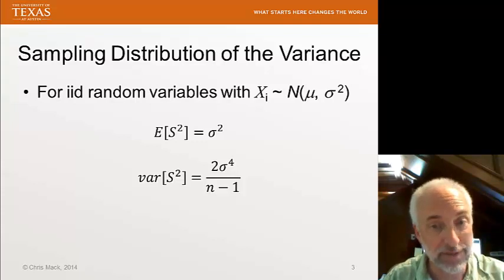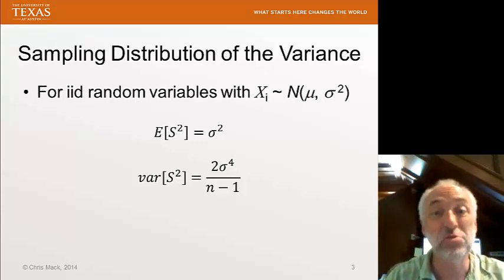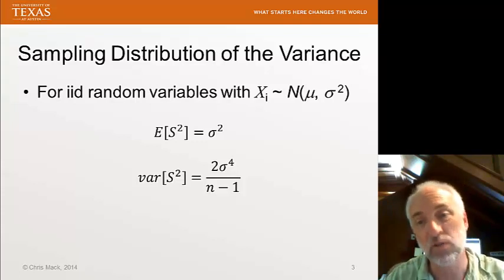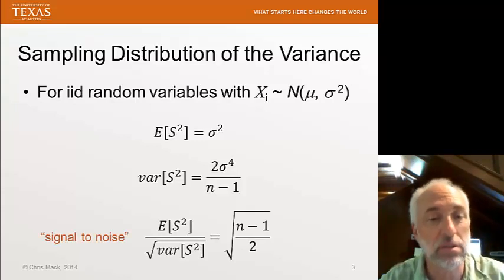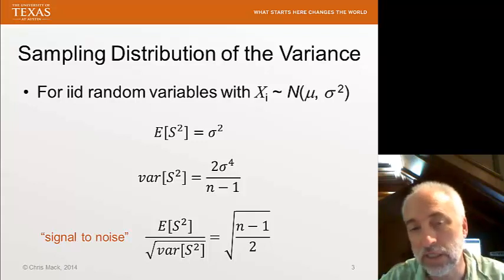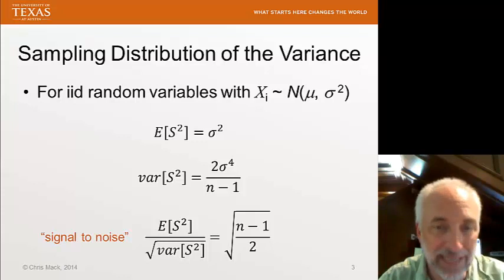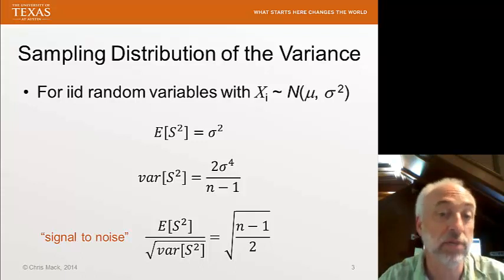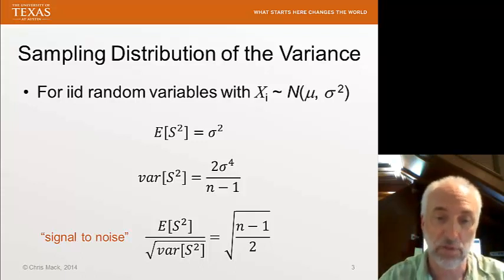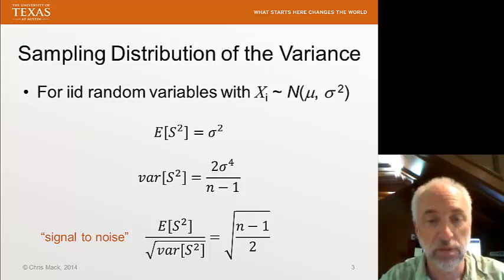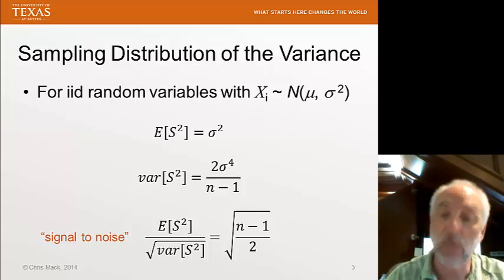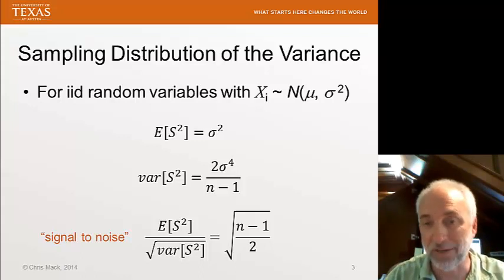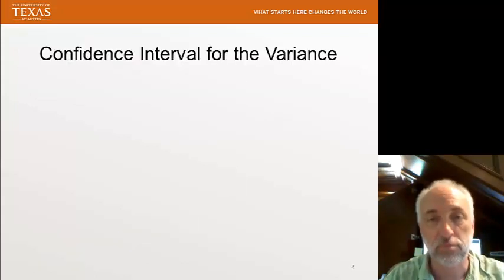The variance of the sample variance is two times sigma to the fourth. That is the variance squared divided by n minus one. And one useful kind of calculation to do in this case is to consider the expectation of the variance divided by the standard deviation of the variance. It's a signal to noise or a relative variance, so to speak. How much signal do we have versus how much noise. And it goes as the square root of n minus one over two. So, larger samples give us more signal and less noise.